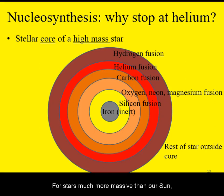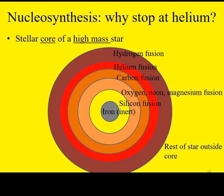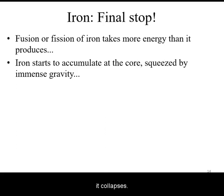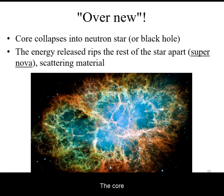For stars much more massive than our Sun, their cores can contract even more and attain higher temperatures for further fusion of carbon into heavier elements. Iron is the final element of stellar nuclear synthesis — it cannot be fused to produce energy. Once iron accumulates at the core, it collapses. The energy released will rip apart most of the star in a supernova, and the core will collapse into a neutron star or a black hole.